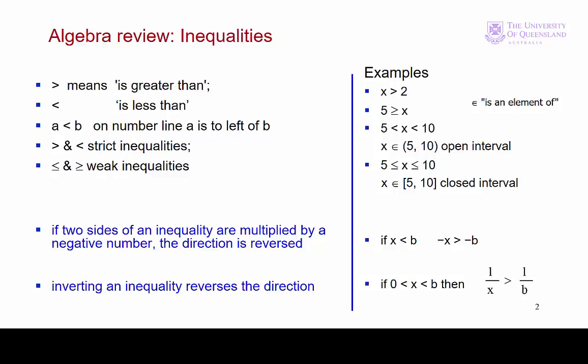Two important symbols are one for greater than and the one for less than. So we have x is greater than 2 for example. These are strict inequalities. Weak inequalities include the possibility that the left hand side and the right hand side are equal and we use these symbols. We might have 5 is greater than or equal to x.